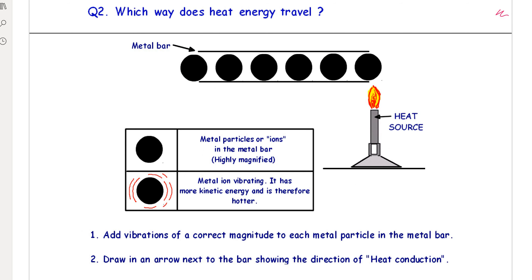Why does conduction occur? Well, within the metal bar itself, you have metal particles or ions, and here they're highly magnified. Now, the ions closest to the heat source start to wobble or vibrate a tremendous amount. They move around a fixed point and they crash into adjacent or next-door neighbor particles.